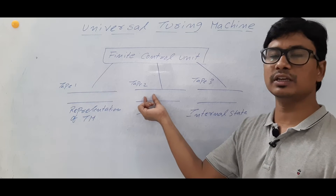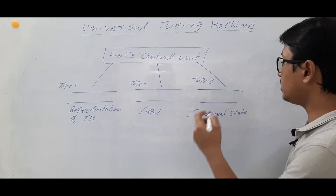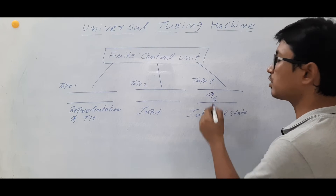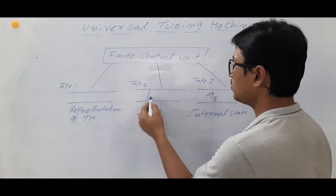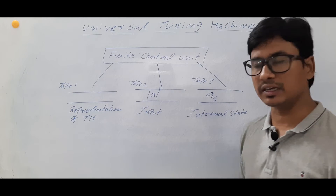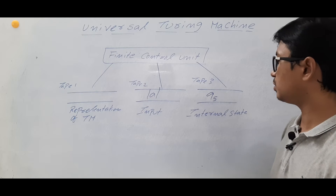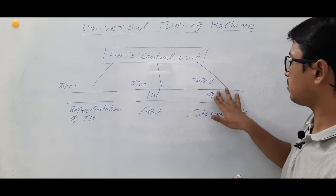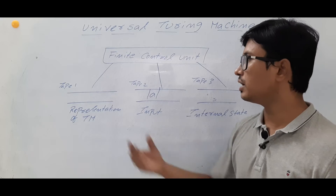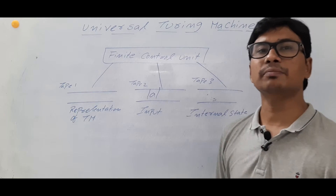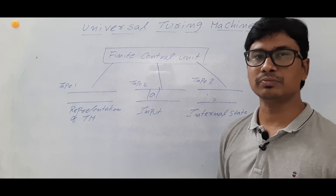Currently you are in some state, and from that state, by looking at the tape alphabets, you are going to some next state. For example, if you are in state Q5 and looking at tape alphabet A, you are going somewhere. So the internal state is stored in tape three, the input is in tape two, and tape one has the representation of the Turing Machine.